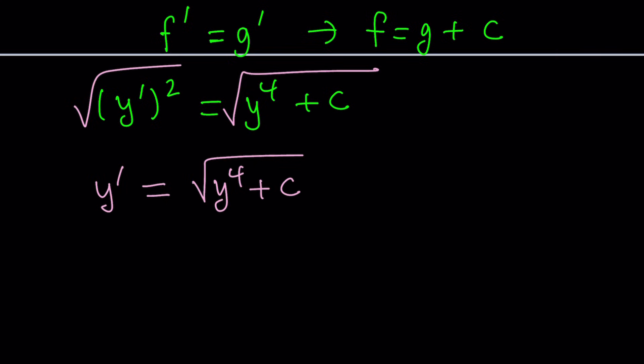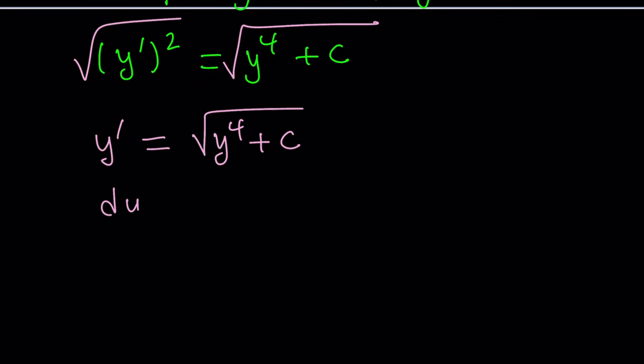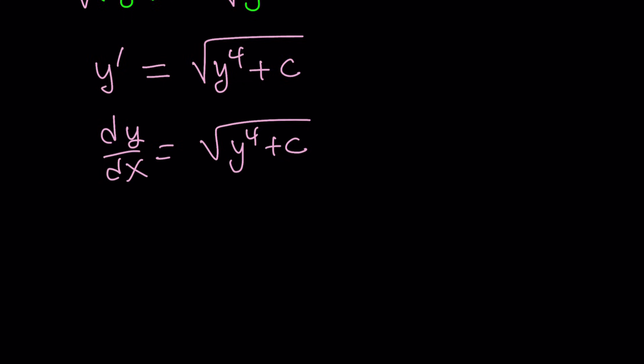Now, how do you solve this? Very easy, because notice that we were able to reduce the degree. Now, we're going to write this as dy/dx, and I know some people say, don't do this, don't say that. I will multiply both sides by dx and divide by the radical. So in other words, we're going to get dy/√(y⁴ + c) = dx, and this is where the mathemagic happens. Ta-da! Hocus pocus, abracadabra. We integrate both sides.